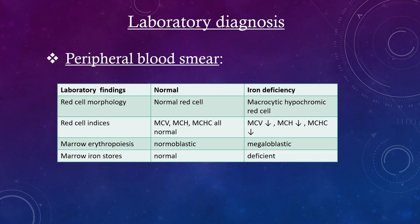Laboratory diagnosis - Peripheral blood smear findings. Red cell morphology: normal red cells in a normal individual; in iron deficiency, cells are microcytic and hypochromic. Red cell indices: MCV, MCH, and MCHC are all normal in a normal individual. In iron deficiency, MCV is decreased, MCHC is decreased, and MCH is also decreased.